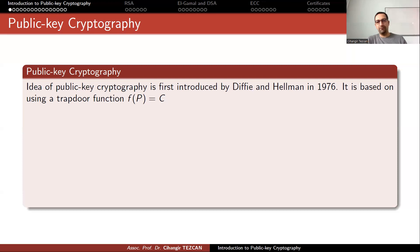The idea of public key cryptography was first introduced by Diffie and Hellman in 1976. They also worked with Merkle, so we can count these three names.